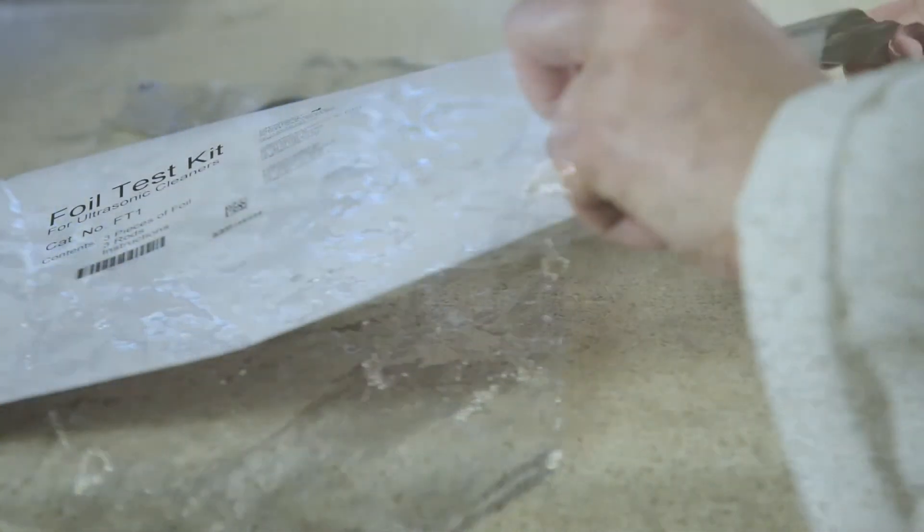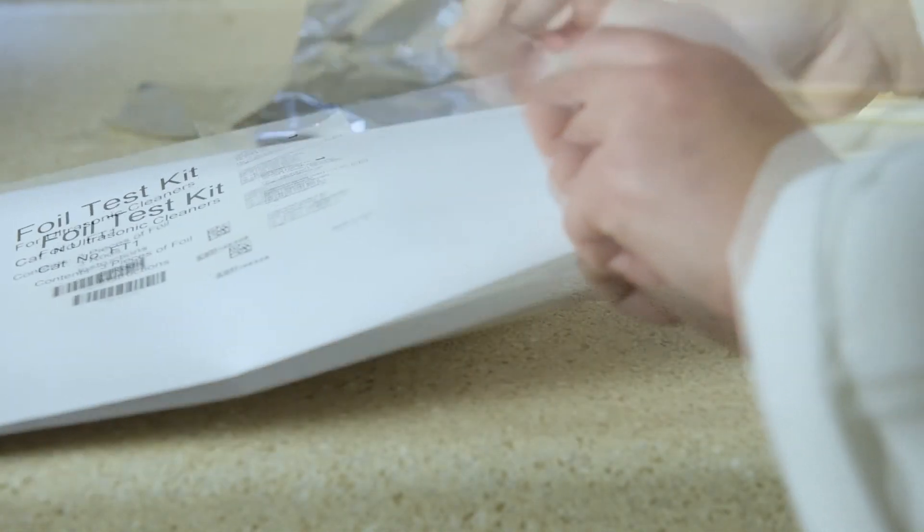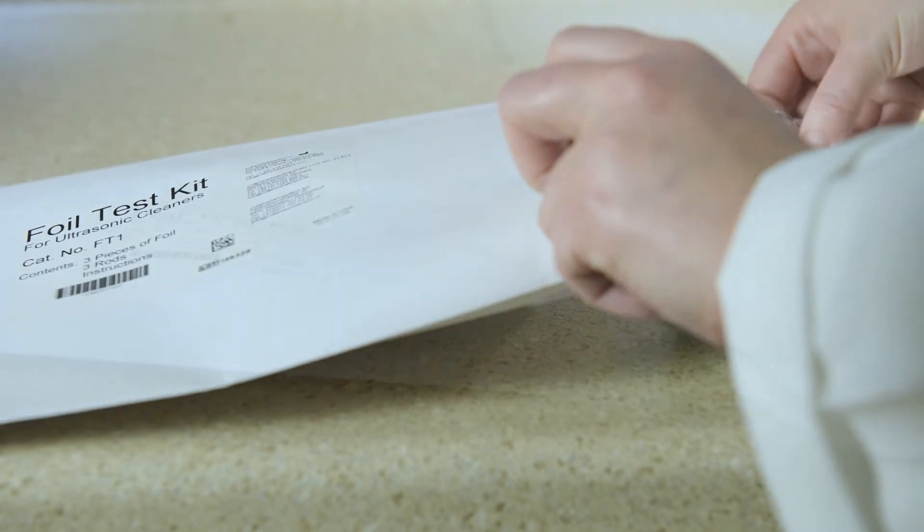Holes should be observed in one or more of the aluminum foil pieces. Date the foil and keep it as a reference for the next time the test is performed.